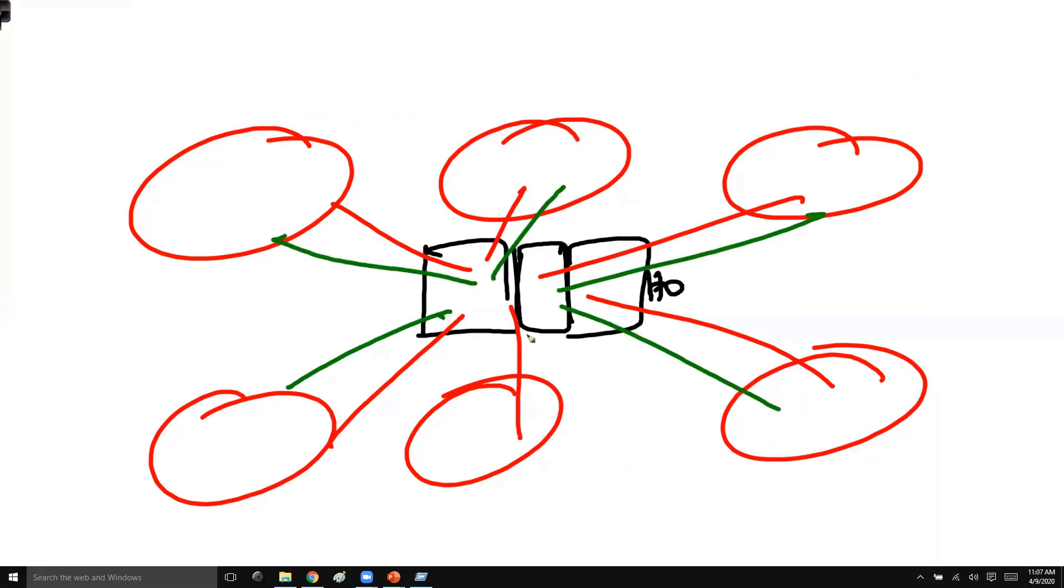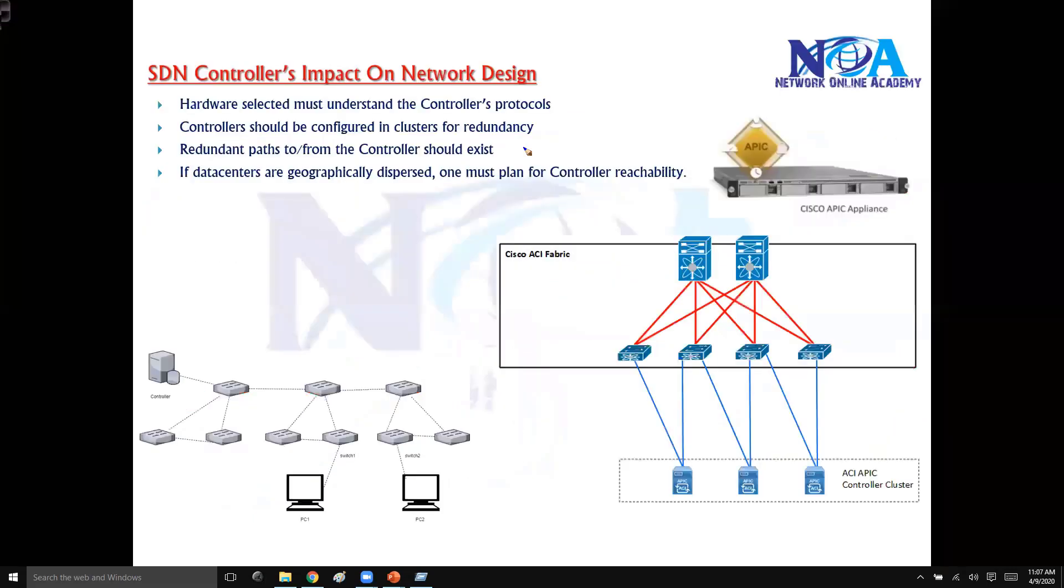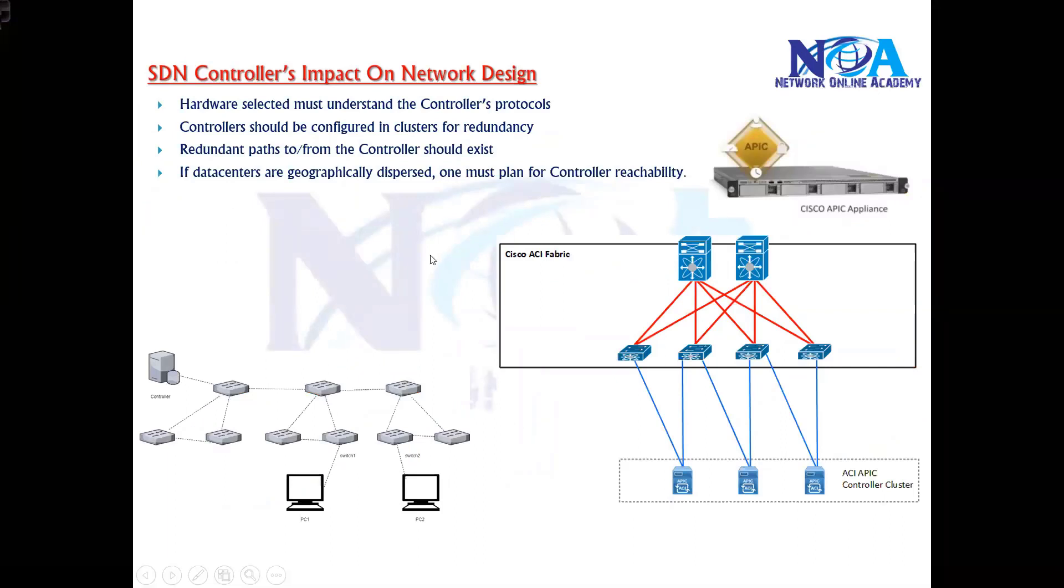We need to make sure that we have redundant paths because again, if there is a single path or single WAN connection, that's going to be a single point of failure. Or you could place a separate controller in each site. Most of the time we prefer a centralized controller to minimize the cost, but at the same time we have to ensure that we do have multiple paths to reach that particular controller.